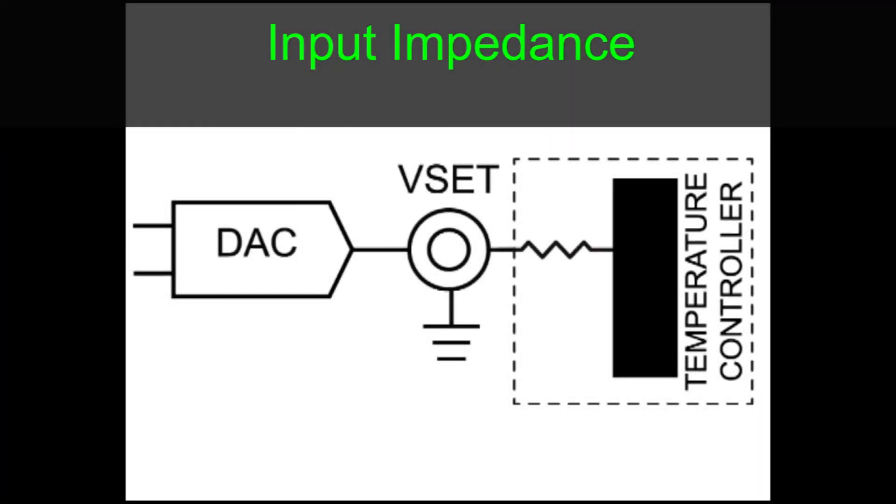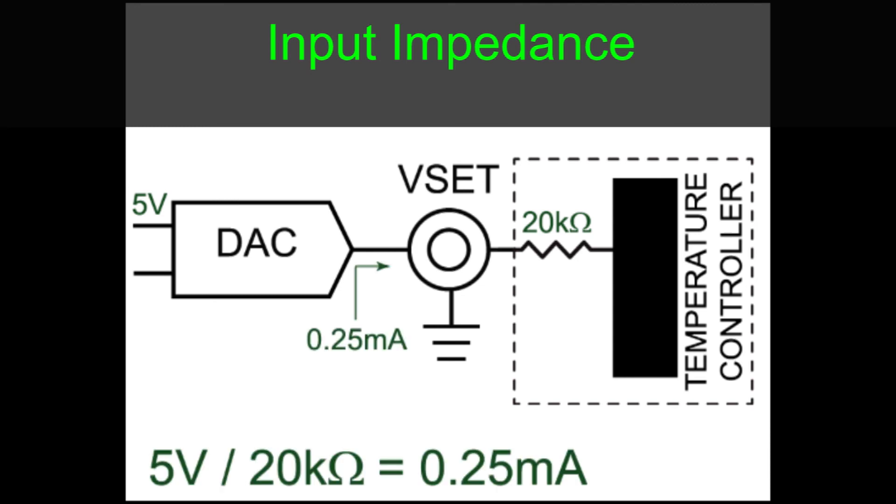Input impedance is specified for analog voltage inputs. It is used to calculate how much current an external signal generator must source. If the analog voltage input is being driven by a D-to-A converter with a maximum voltage of 5 volts and an input impedance of 20 kilo ohms, the D-to-A converter must source at least 0.25 milliamps.